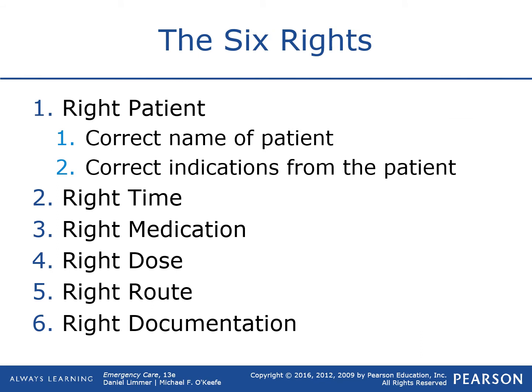A term you'll hear a lot in EMS is the 'rights of drugs.' Some people say five rights, some say seven or eight — I generally stick to about six. First is the right patient: is this the correct patient we're giving the medication to? This is especially important in mass casualty incidents with more than one patient. Make sure the indications are correct and this is the right patient who needs this drug.